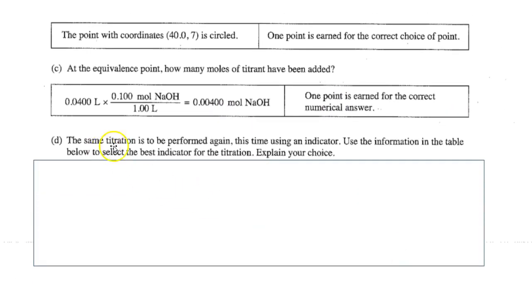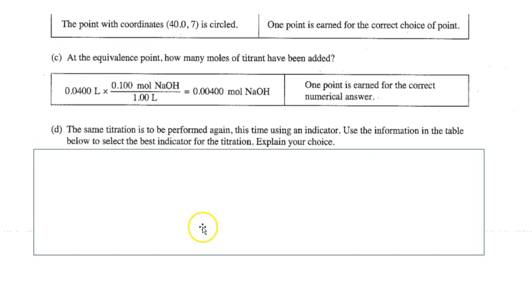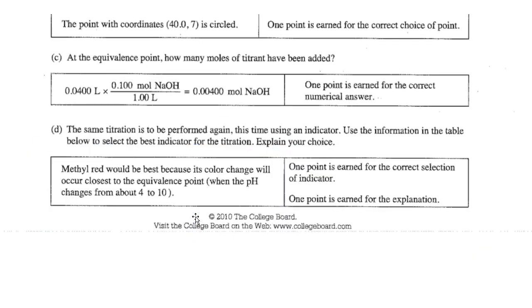The same titration is to be performed again. This time, they're going to use an indicator. Use the information in the table below to choose a good indicator. Well, it better be around 7. This is the closest, I think. Look at these ones, they are way off. At least methyl red's decent. I guess I'd go with methyl red. Methyl red would be best because its color change will be closest to the pH of 7 that we need. It does change between 4 and 10, so you're on that steep part, so good enough.